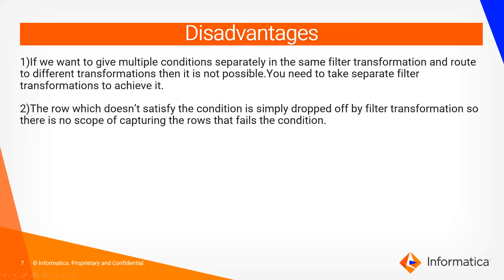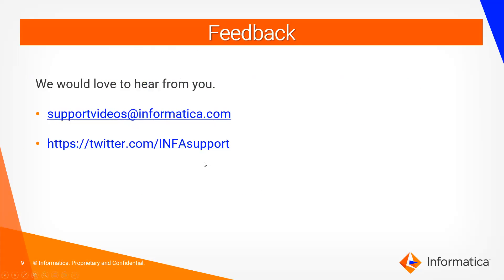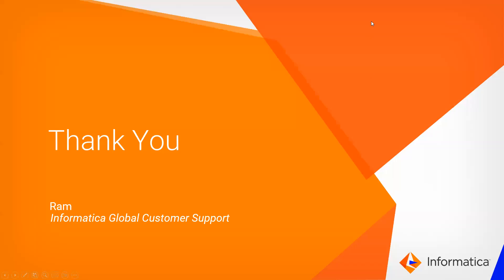The disadvantage is: if you want multiple conditions routing to different transformations using the same filter transformation, it is not possible — you need separate filter transformations. Also, a row which doesn't satisfy the condition is simply dropped off. If you keep only gender equals male, the female records are dropped with no possibility of capturing and sending them to another target. These limitations can be overcome with another transformation that I'll cover in the next video. For references, see the filter transformation guide, our InfoSupport channel, and send feedback to support at informatica.com or our Twitter channel. Thank you for watching.